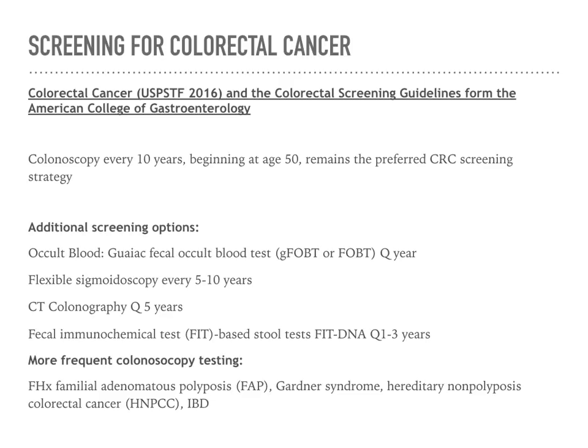Colorectal cancer screening guidelines are set forth by the American College of Gastroenterology. In general, they recommend colonoscopies every 10 years beginning at age 50. Additional screening options include looking for occult blood, a flexible sigmoidoscopy every 5 to 10 years, or CT colonography every 5 years. You want to stay up to date on screening recommendations to ensure you're offering proper screening for your patients.